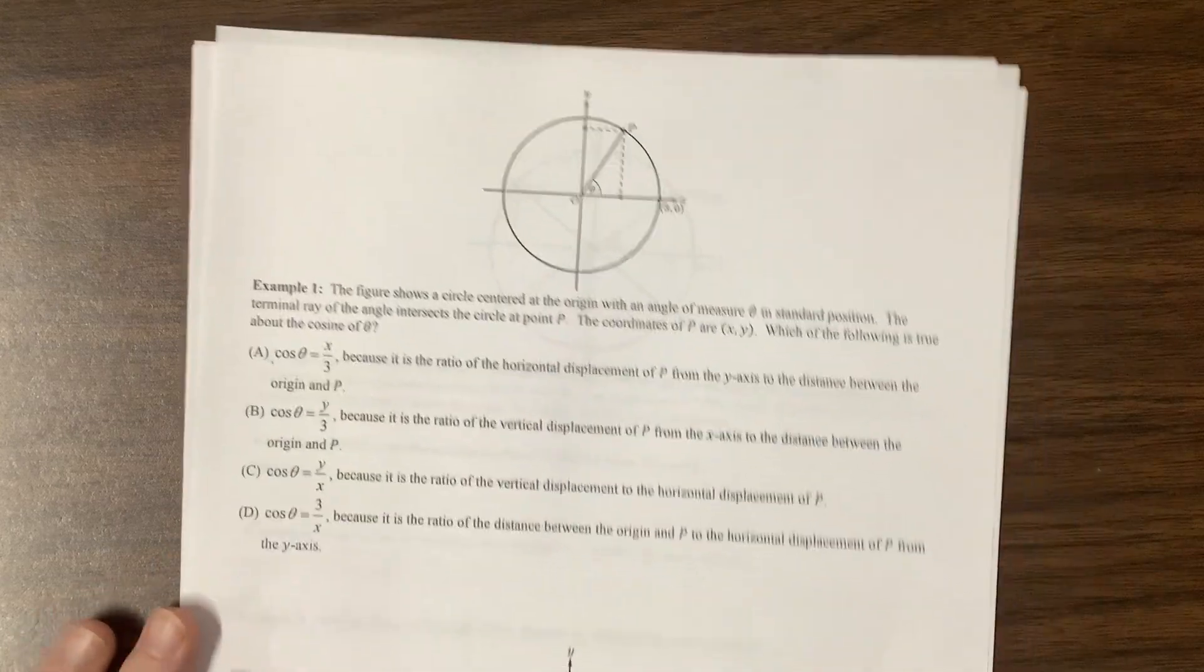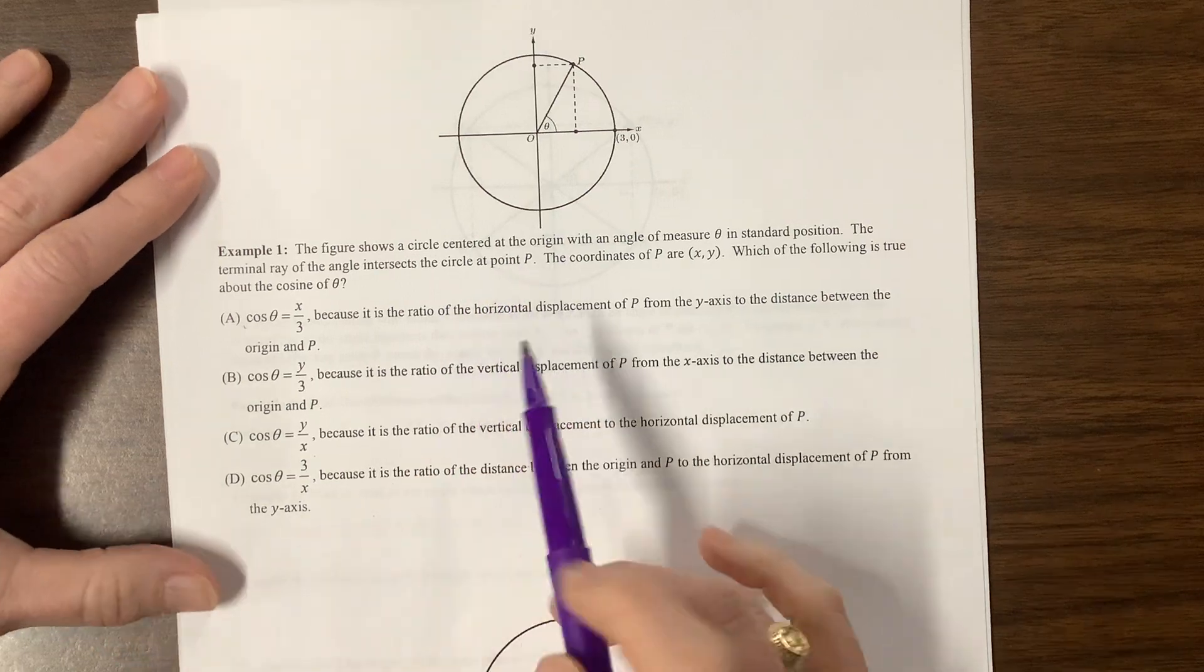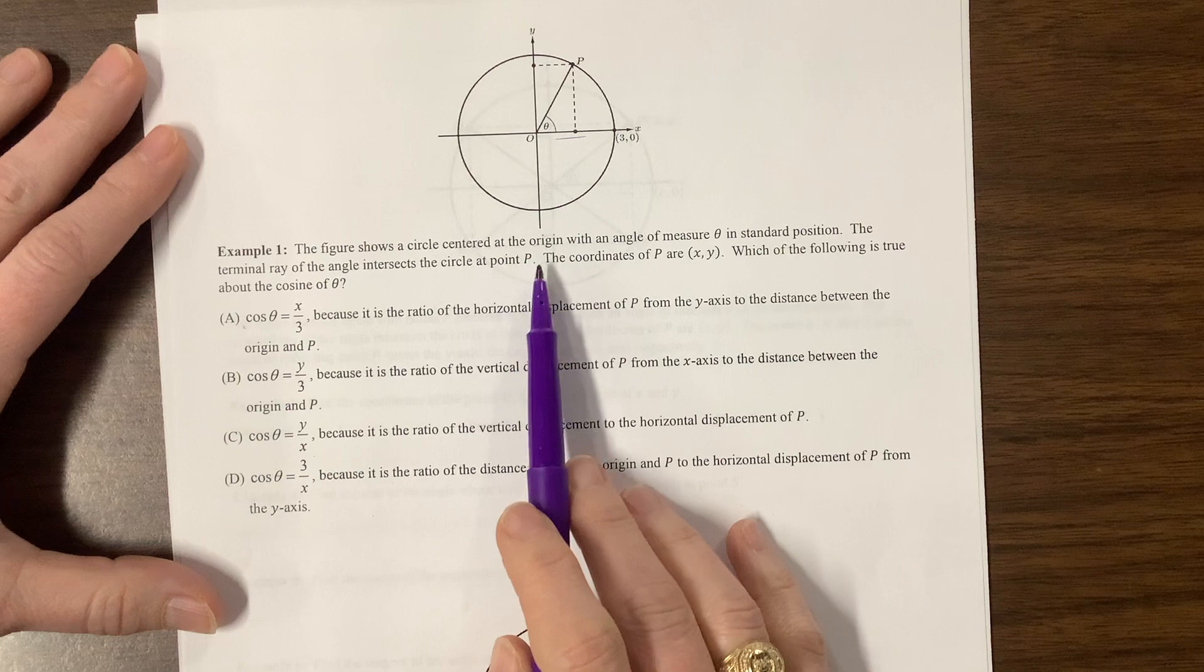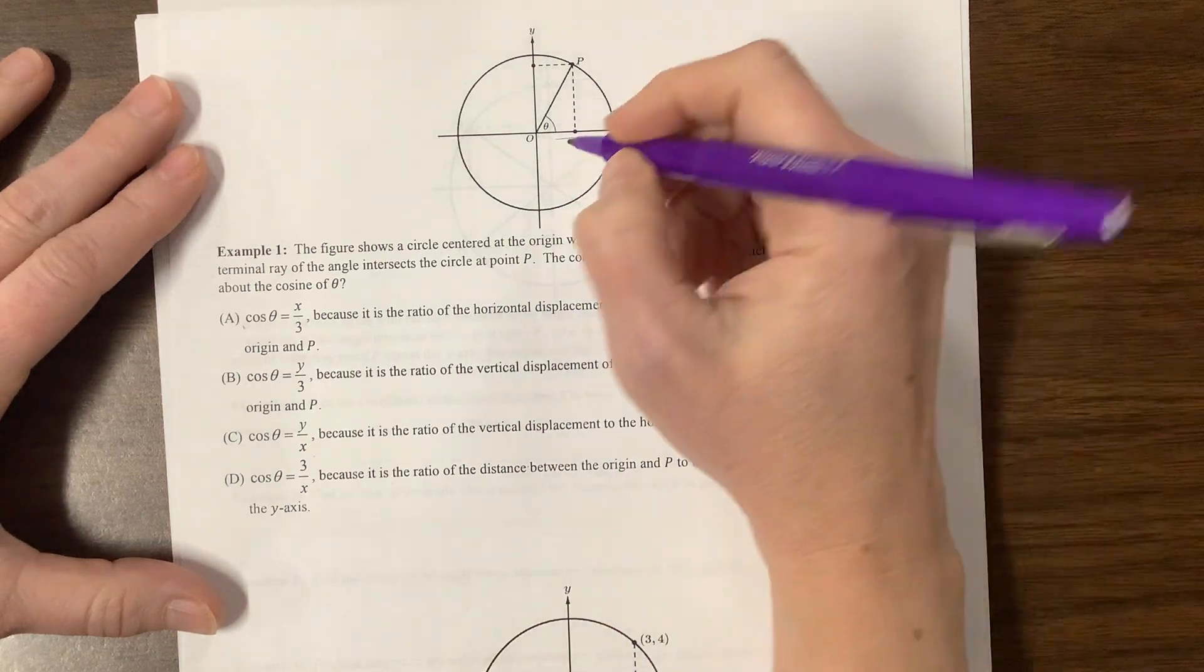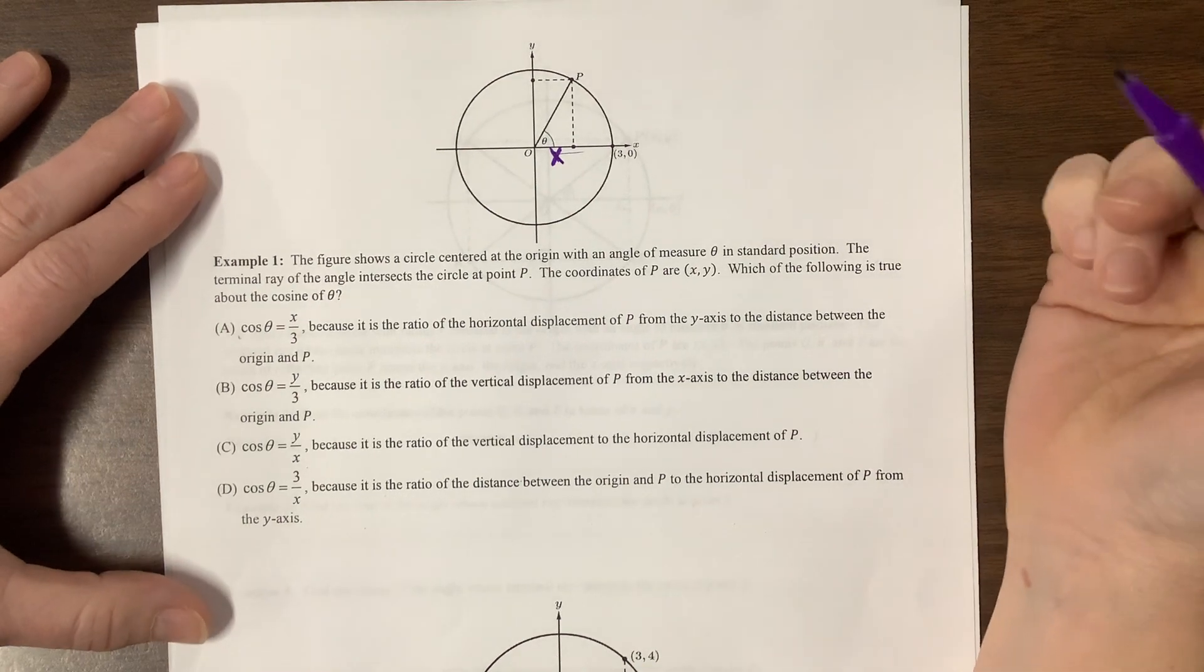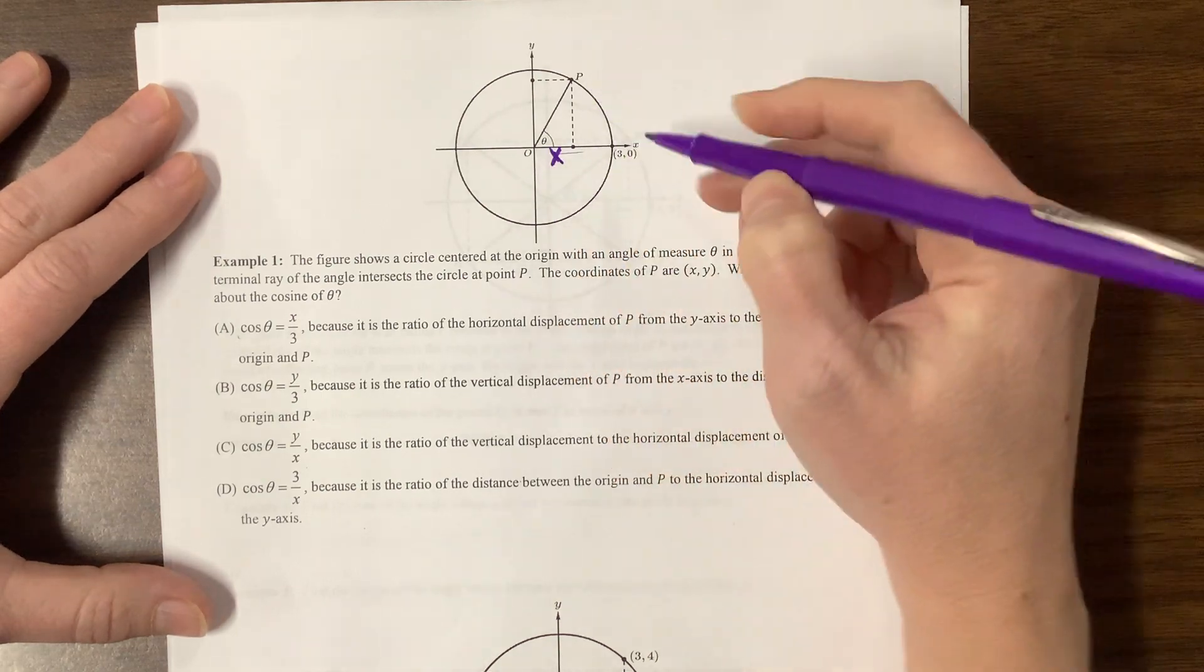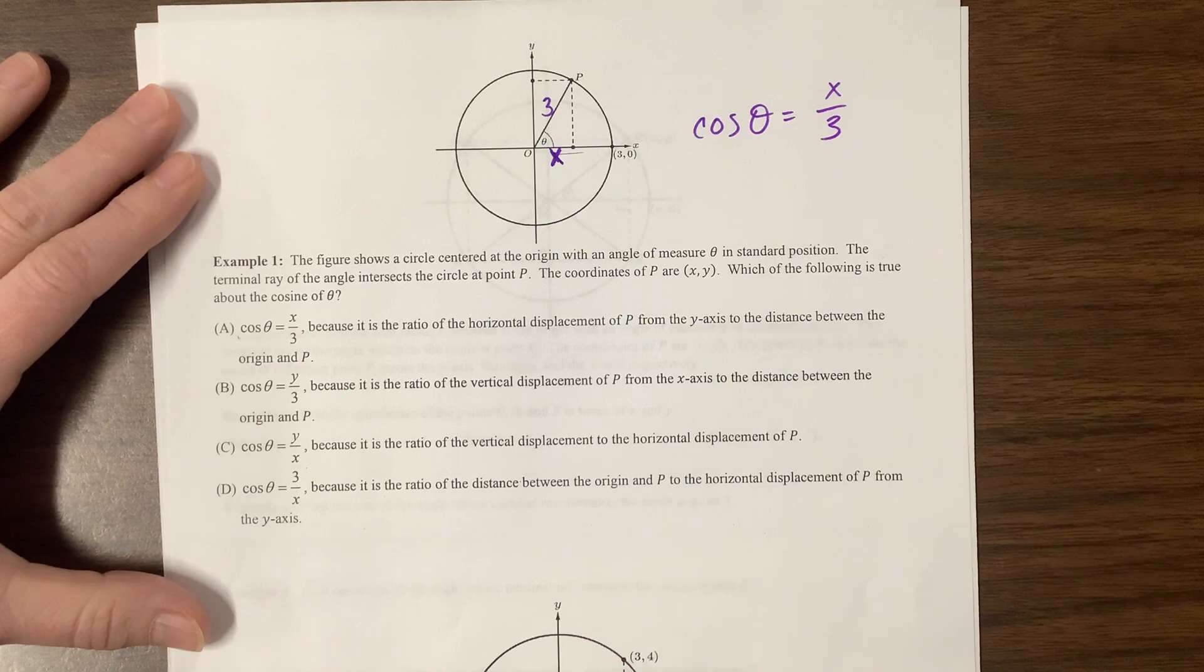So then here is a multiple choice question that may be AP style. The figure shows a circle centered at the origin with an angle measured theta in standard position. Okay, so it's starting here, and it's opening up there. The terminal ray at the angle intersects a circle at P. The coordinates are x, y, which is the following is true about cosine of theta. Well, cosine is going to be this x value divided by the radius. Well, do we know how big the radius is? Yes, we do. Because they're telling us this point is 3, so that means that 3, 0, that means that the radius is 3 units long.